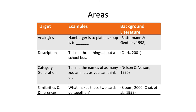We had a number of different kinds of item types. One type that was actually pretty challenging would be analogies — for example, 'hamburger is to plate as soup is to bowl.' We also used descriptions, asking children to tell us things about an object they might be familiar with, such as 'tell me three things about a school bus.' Category generation was another type — for example, 'tell me as many zoo animals as you can think of,' giving children a set amount of time to generate as many items as they could.